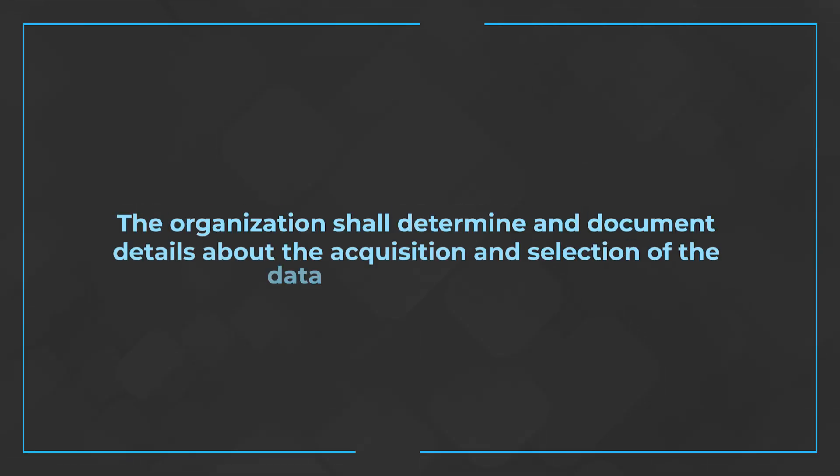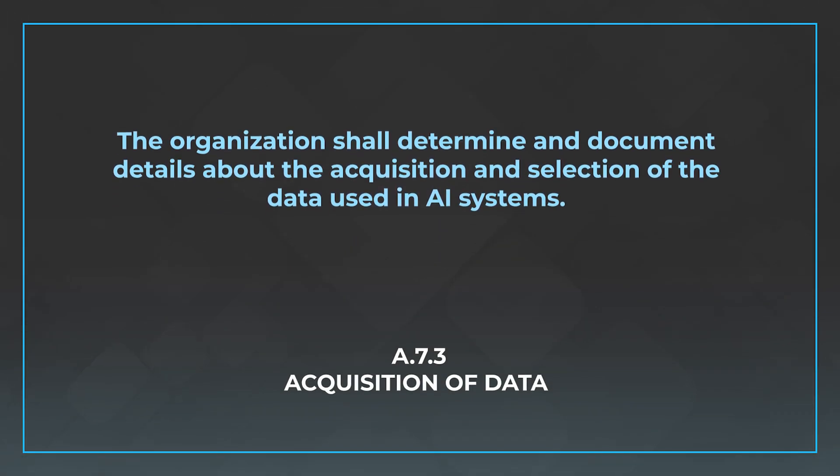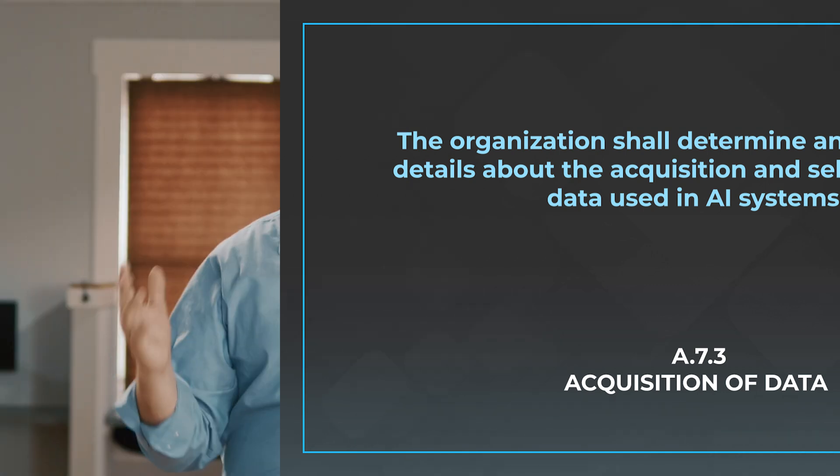The next control is A.7.3, Acquisition of Data. This is how you're going to acquire the data you're using for your AI systems. The control says the organization shall determine and document details about the acquisition and selection of the data used in AI systems. It's a very broadly worded control because there's a very broad set of data you may need, but ultimately you need to determine and document those details relevant and pertinent to your organization.